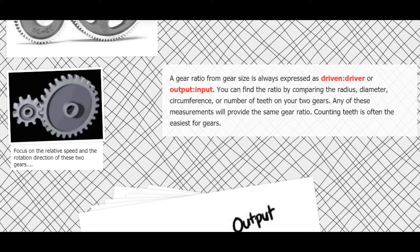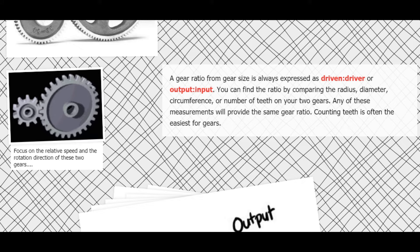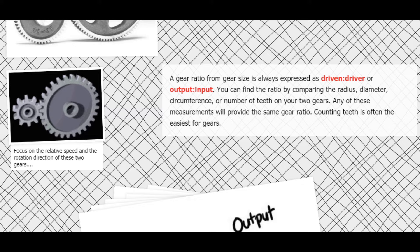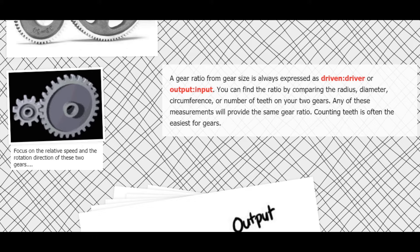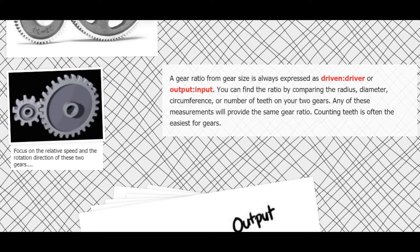We've got an animation here showing a small gear in mesh with a large gear. We can see the small gear has much fewer teeth, is turning clockwise, and the large gear is turning counterclockwise. The small gear is actually spinning faster than the large gear. This all has to do with the gear ratio.